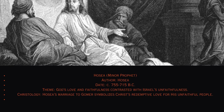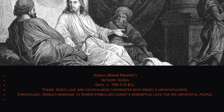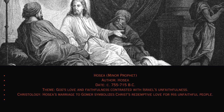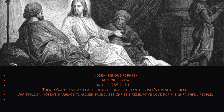28. Hosea. Minor prophet. Author: Hosea, circa 755–715 B.C. Theme: God's love and faithfulness contrasted with Israel's unfaithfulness. Christology: Hosea's marriage to Gomer symbolizes Christ's redemptive love for his unfaithful people.